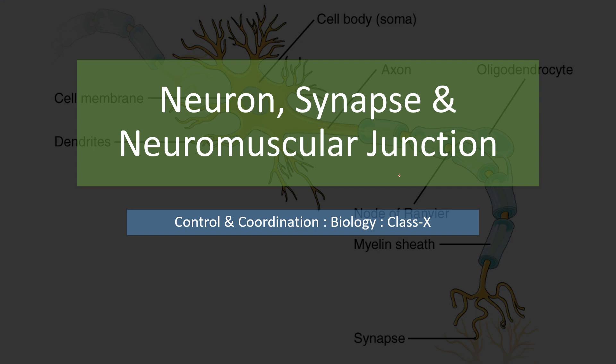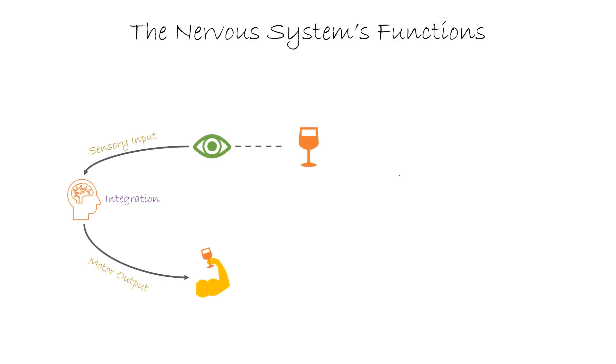Hello students. In this video we're going to learn certain concepts of the chapter Control and Coordination of Class 10th biology. The concepts we're going to learn today are the structure of the neuron, synapse, and the neuromuscular junction.